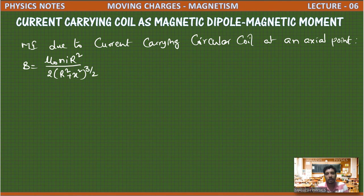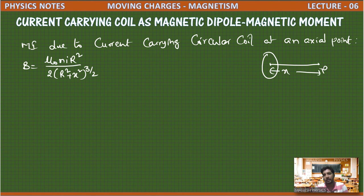Here, x is the distance of the point from the center of the loop, and r is the radius of the loop.